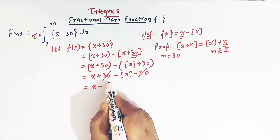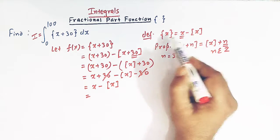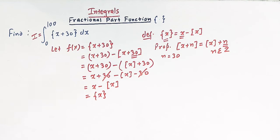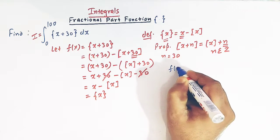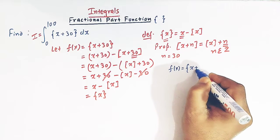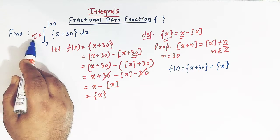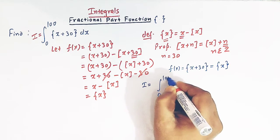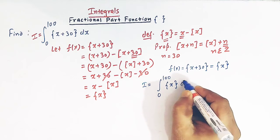So we are left with x minus the greatest integer of x, and x minus the greatest integer of x is simply the fractional part of x. So we have arrived at the conclusion that f of x, that is the fractional part of x plus 30, is simply equal to the fractional part of x. So now our integral becomes I equal to the integral from 0 to 100 of the fractional part of x, replacing the fractional part of x plus 30.